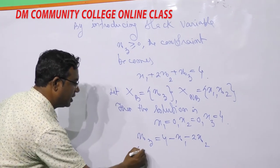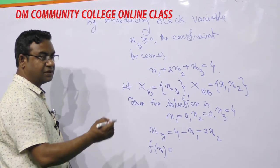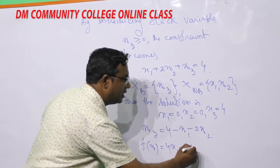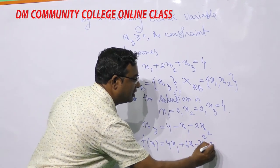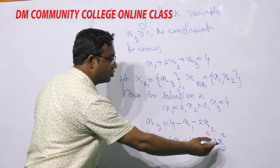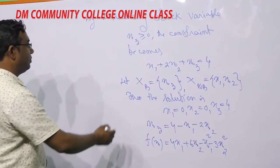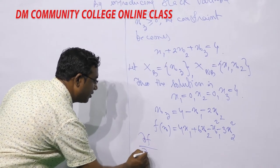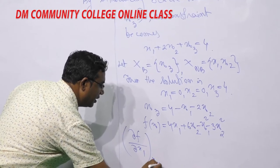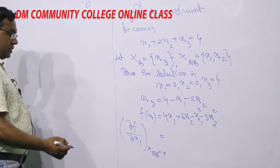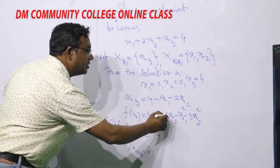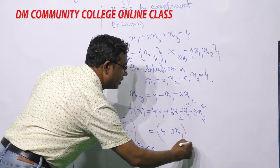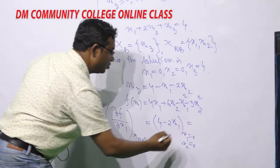Express the objective function in terms of non-basic variables. The objective function is: f(x) = 4x1 + 6x2 − x1² − 3x2². Here x1 and x2 are the non-basic variables. Take the partial derivative of f(x) with respect to x1 and put the non-basic variables equal to 0. The derivative gives: 4 − 2x1. Putting x1 = 0, x2 = 0, this equals 4.